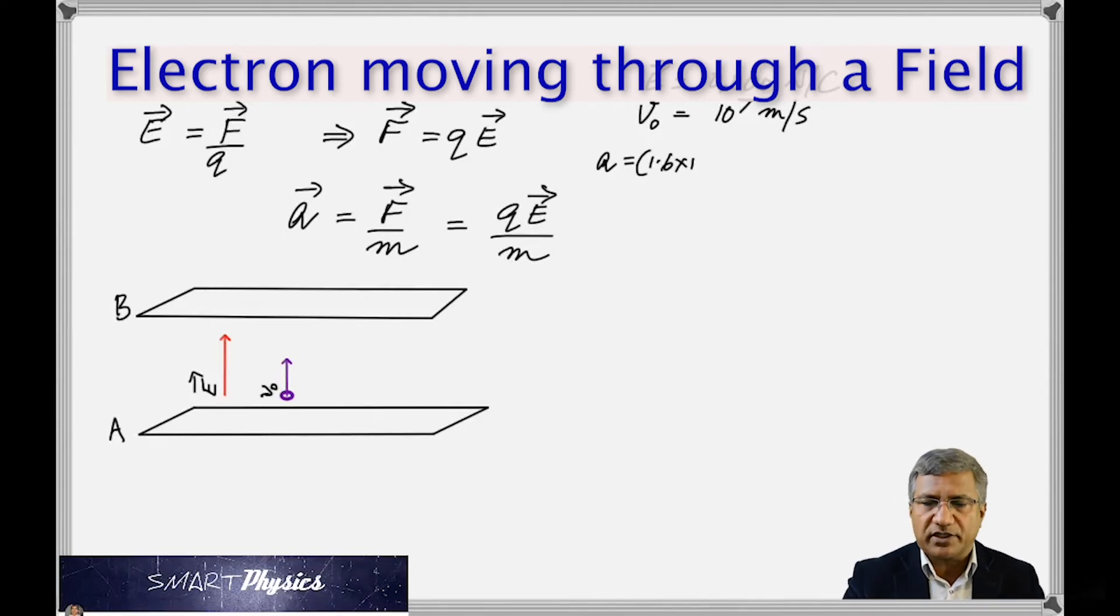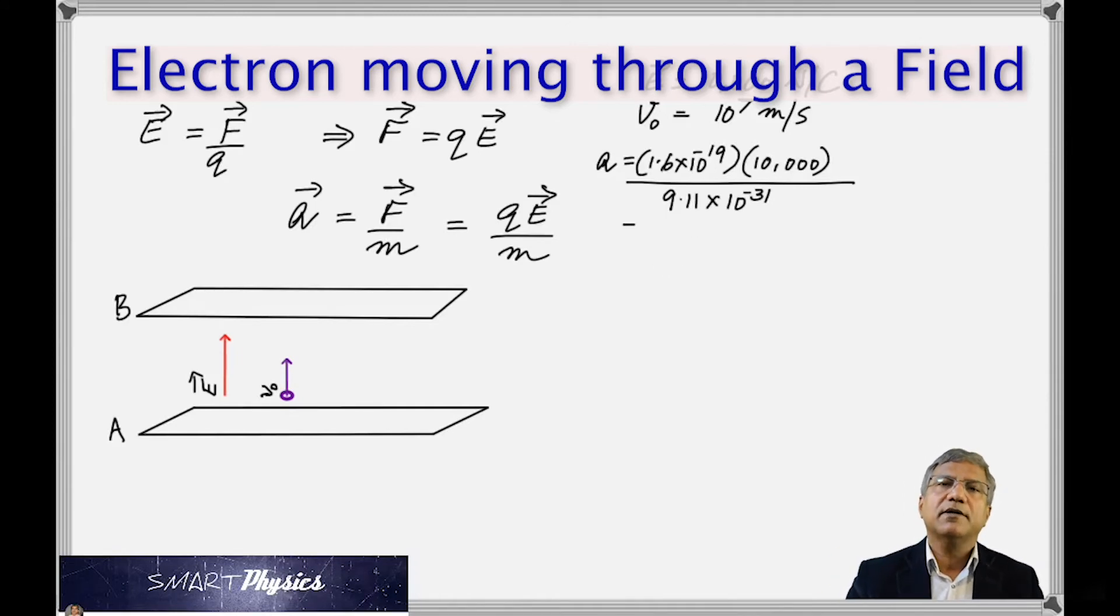So we can calculate the acceleration using QE by M, where Q is the charge of the electron, 1.6 times 10 to the negative 19, times 10,000 divided by the mass of the electron, which is 9.11 times 10 to the negative 31 kilograms.